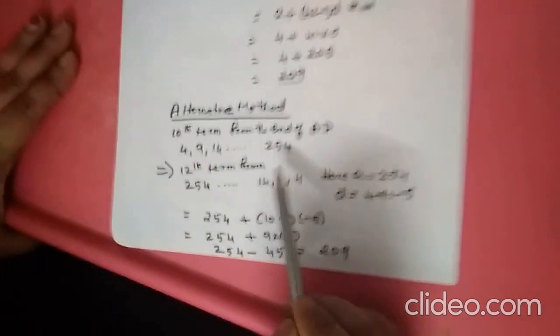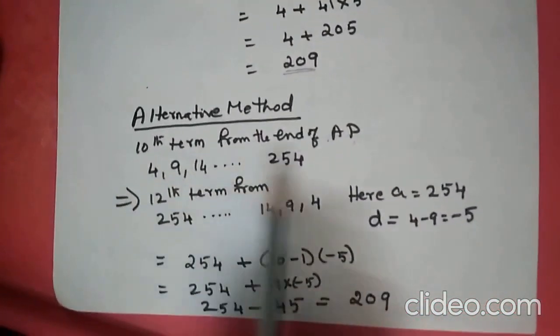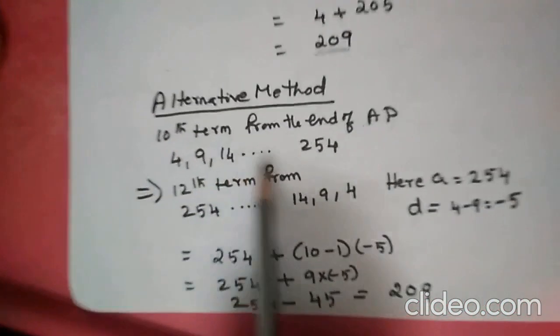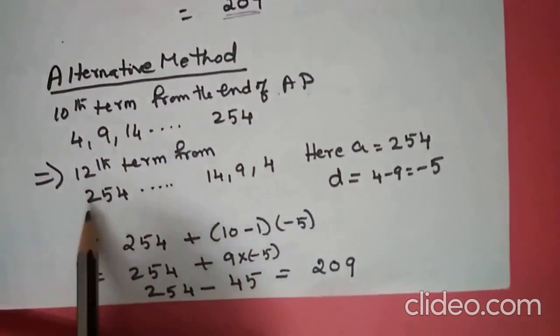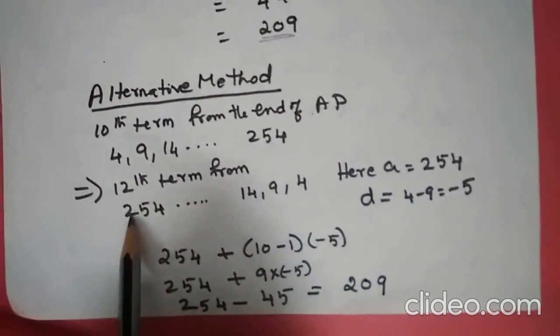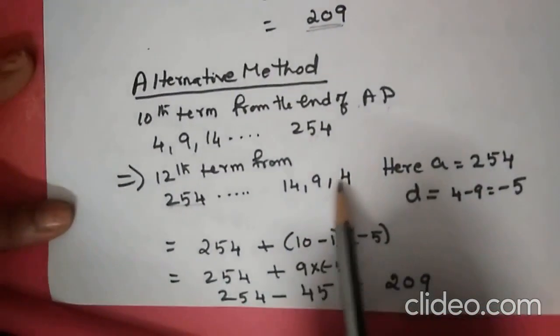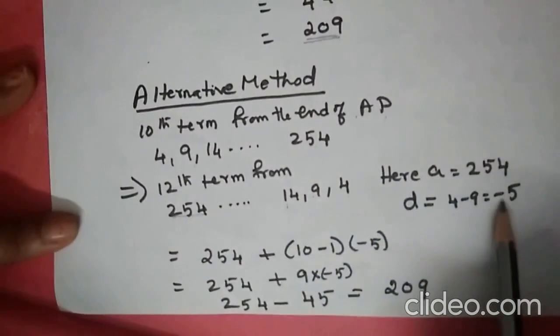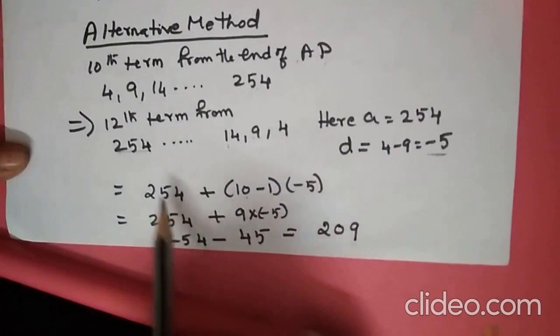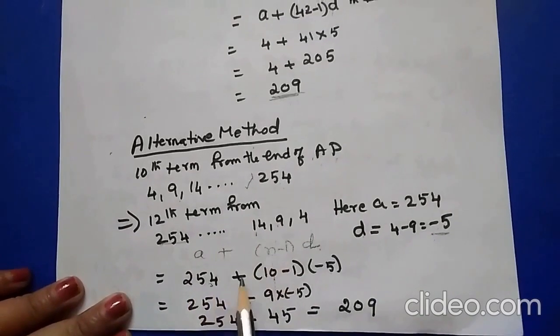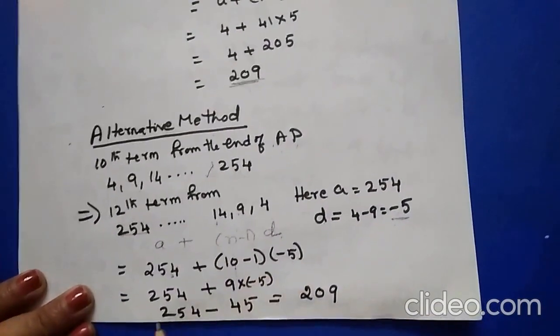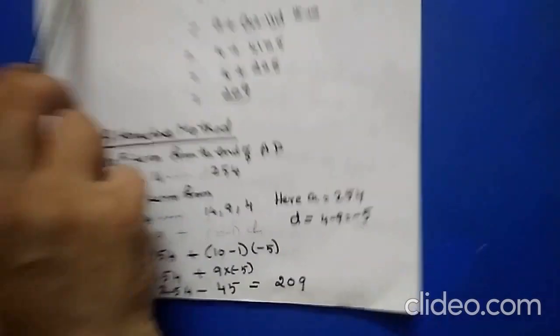Alternative method: Reverse the order of the AP to get 254, ..., 14, 9, 4. Now A=254 and the common difference becomes 4 - 9 = -5. Find the 10th term from the beginning: 254 + (10-1) × (-5) = 254 - 45 = 209. The same answer. You can either remember the formula for the reverse order or directly reverse the sequence and apply the usual procedure.